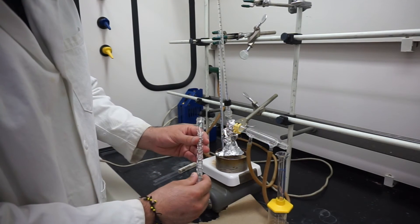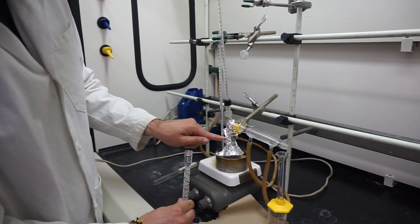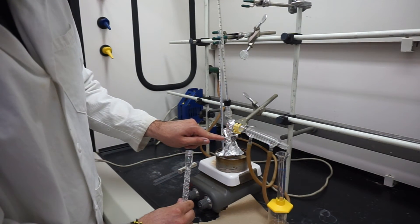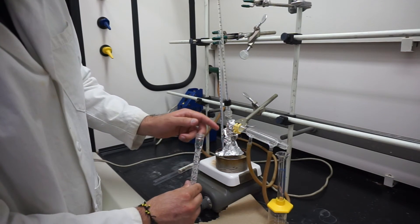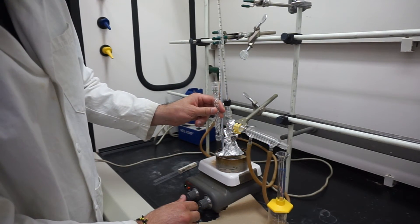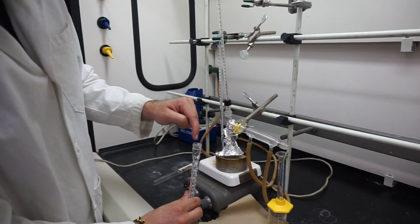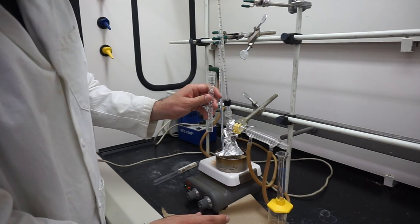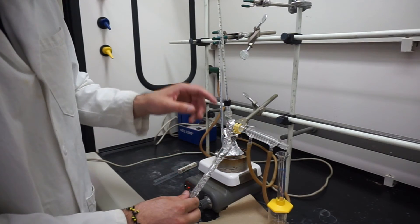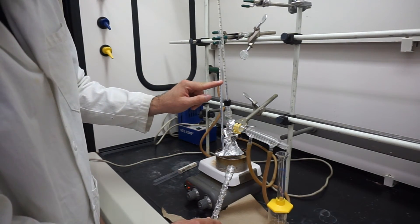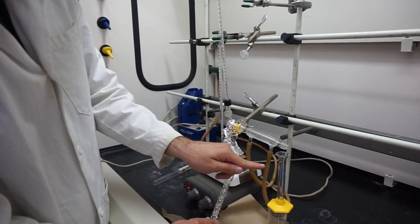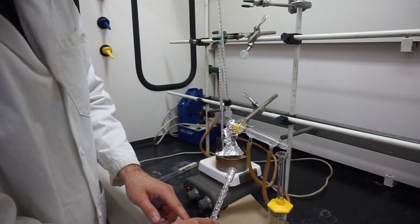Now the distillation with the Vigreux column, the only difference is we're going to take this part out and we'll attach the Vigreux column right here, and then the distillation head will go on top. That's the only difference between the two setups. You're still going to be monitoring the heat as it distills over and collecting in your graduated cylinder.